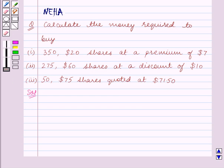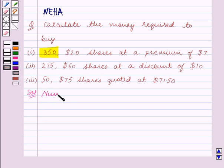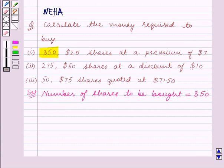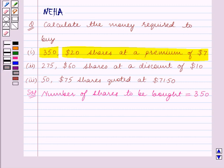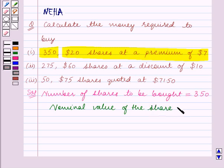In Part 1, the number of shares to be bought is given to be 350. Now, $20 shares at a premium of $7 means the nominal value of the share is $20 — that is the original value of a share at which the company sells to investors. So the nominal value of the share is equal to $20.